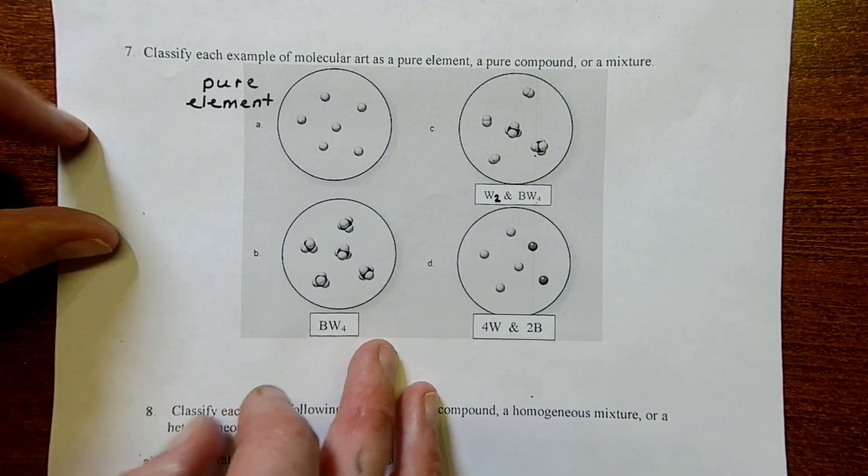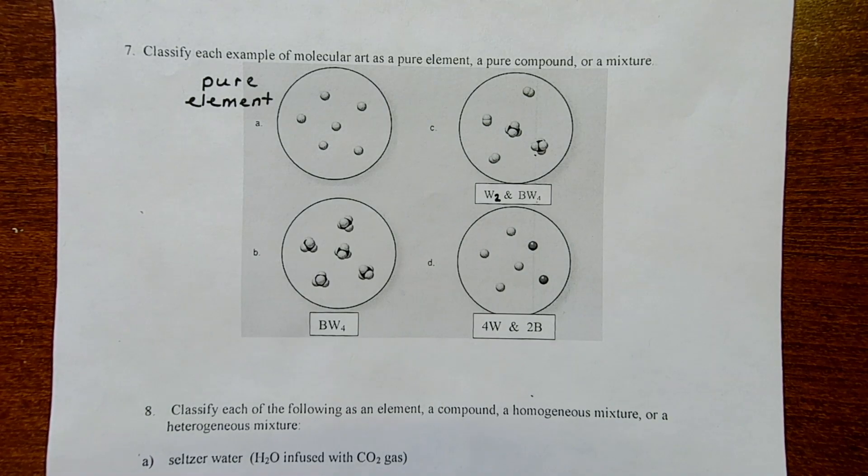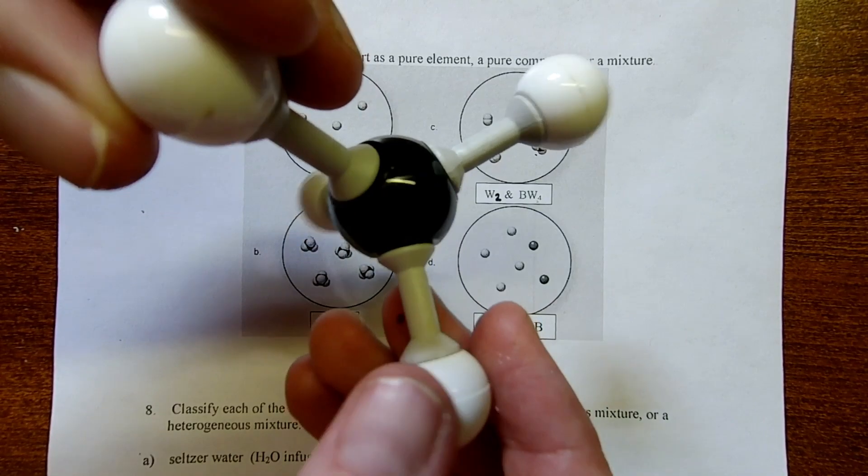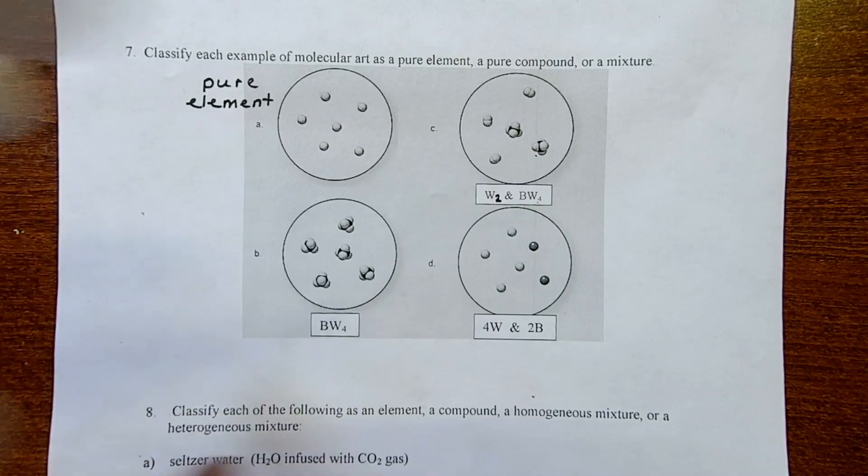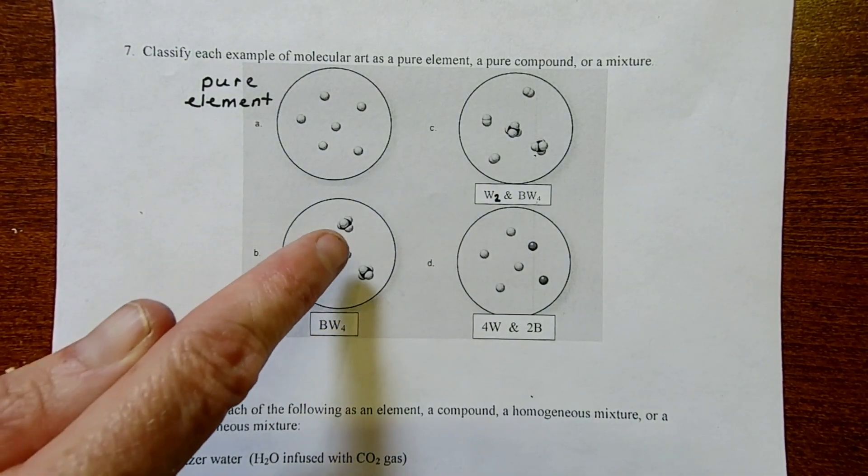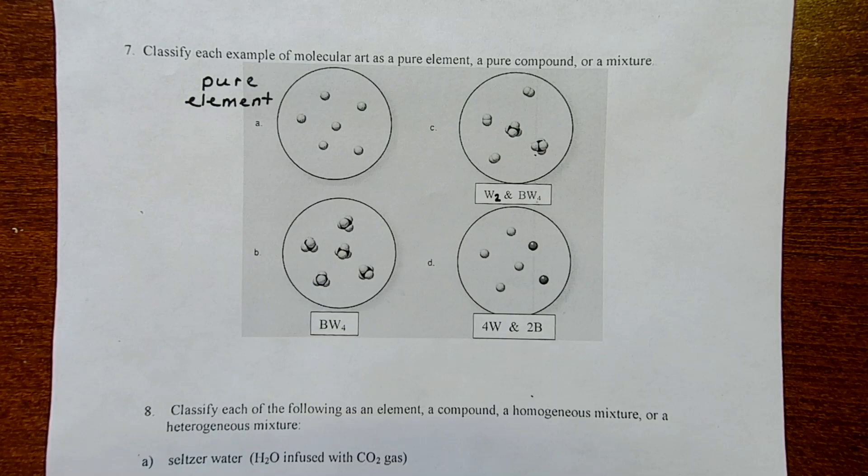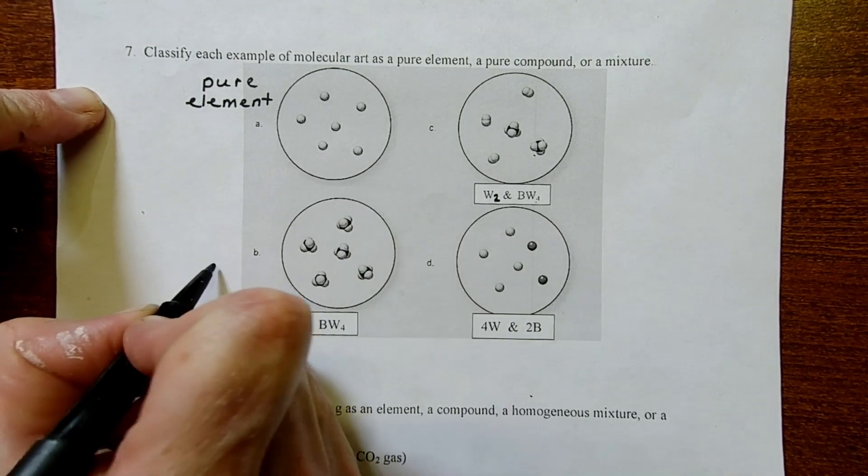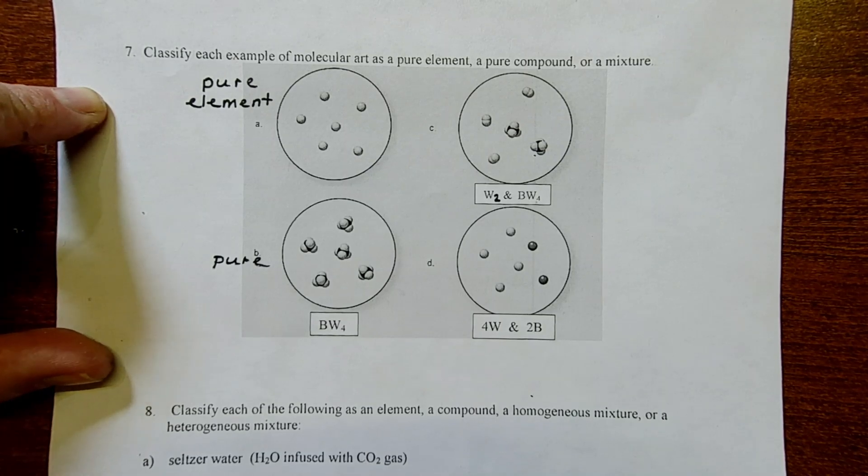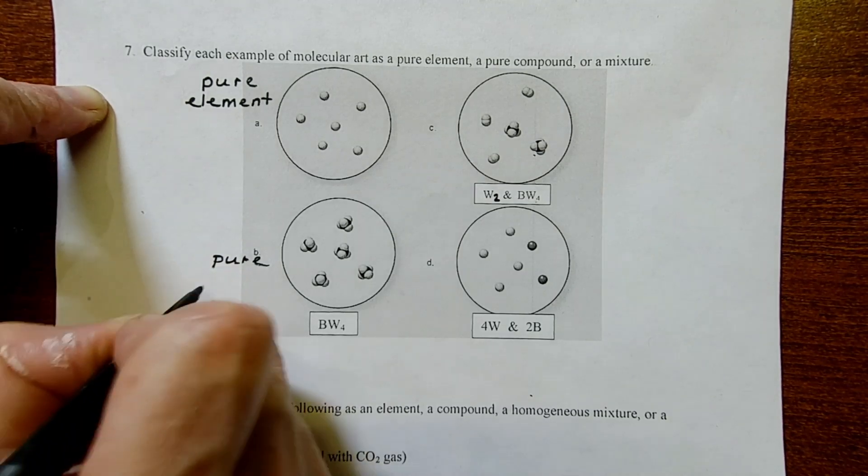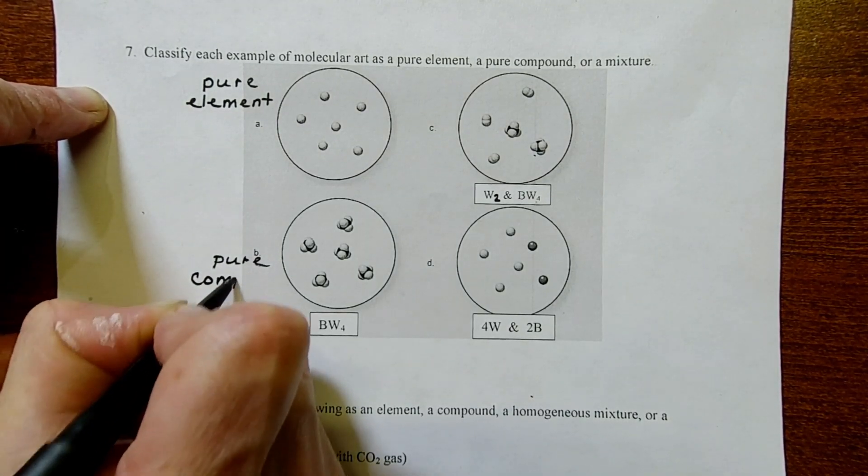In picture B, we have this molecule with a black center atom and four white spheres, four white atoms attached to that. And it repeats, so we have that same molecule over and over and over again. Just one type of thing going on in this picture, so B is definitely pure. However, within that one thing, we see multiple elements or multiple colors, so we know that we're looking at a compound.